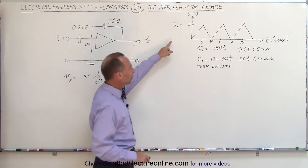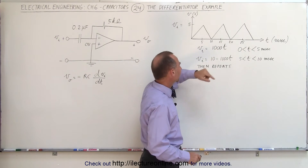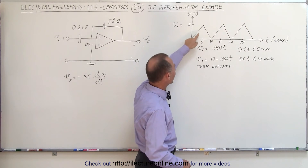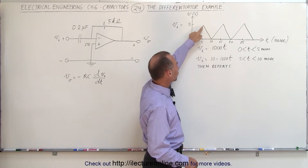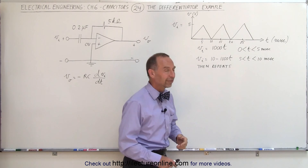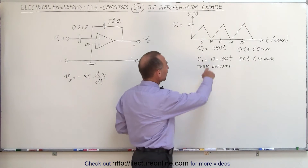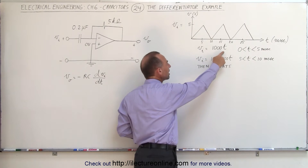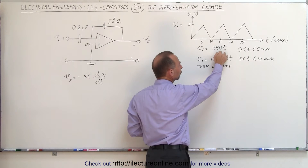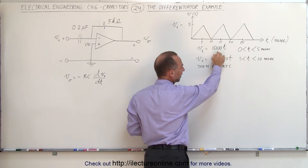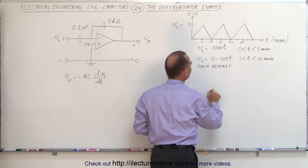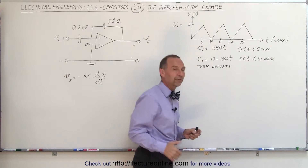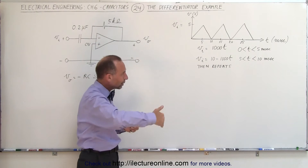If the input voltage is a sawtooth wave, we have an increasing voltage for the first five milliseconds from zero to five volts, and then a decreasing voltage from five back to zero for the next five milliseconds. The equations for that input voltage would be: V sub i equals one thousand t — basically one volt per millisecond — for the first five milliseconds, and then V sub i equals 10 minus one thousand t for the next five to ten milliseconds, and then it repeats.